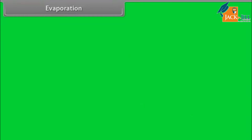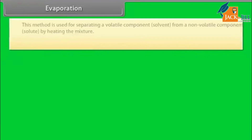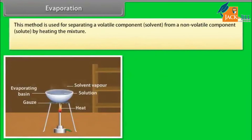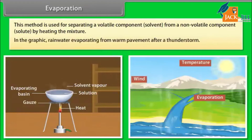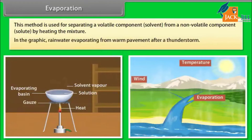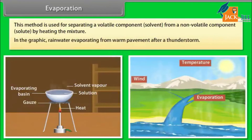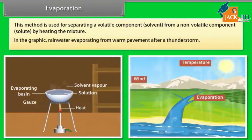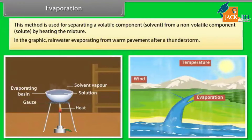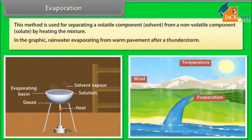Evaporation: This method is used for separating a volatile component (solvent) from a non-volatile component (solute) by heating the mixture. A graphic example is rainwater evaporating from warm pavement after a thunderstorm.